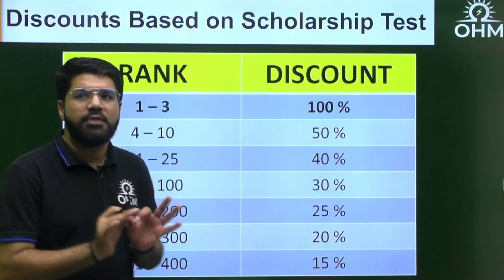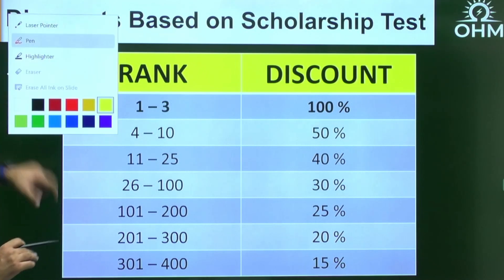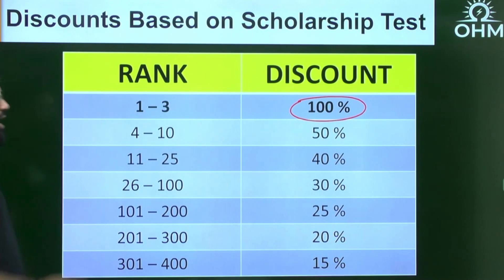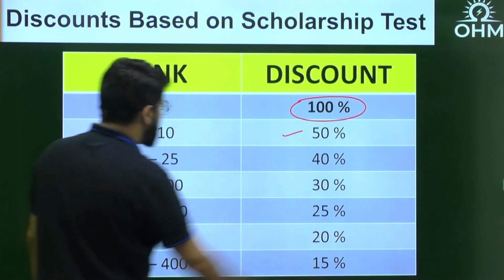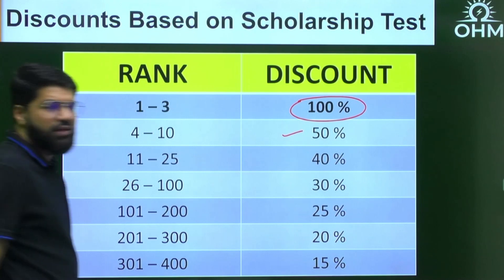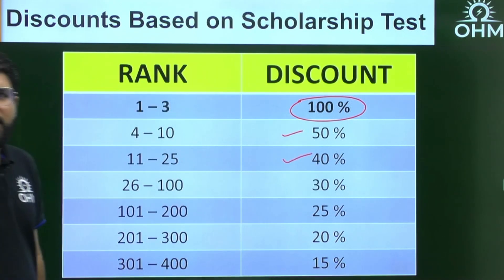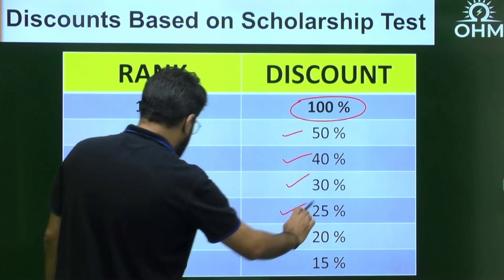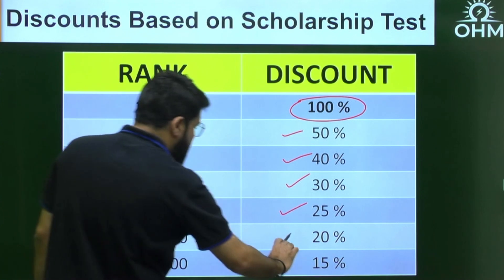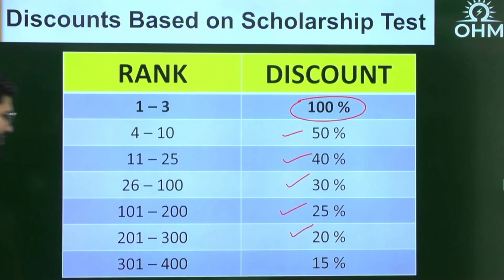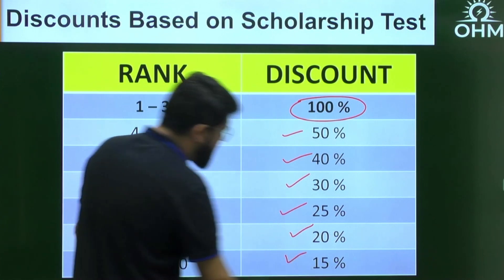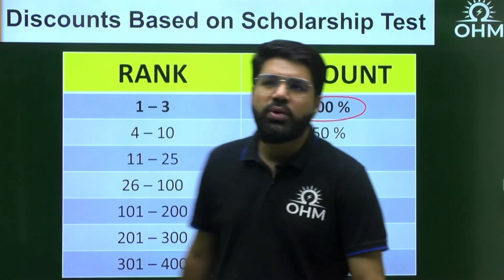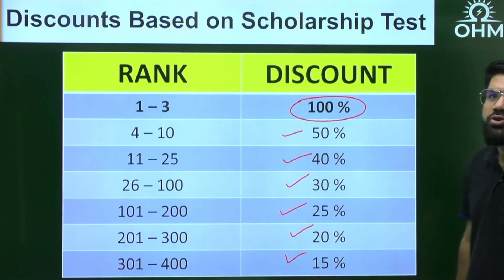The scholarship tiers are as follows: Top 3 performers get 100% scholarship. Rank 4–10 gets 50%. Rank 11–25 gets 40%. Rank 26–100 gets 30%. Rank 101–200 gets 25%. Rank 201–300 gets 20%. Rank 301–400 gets 15% scholarship on the online course.